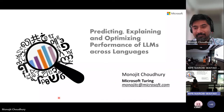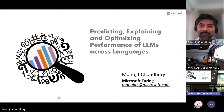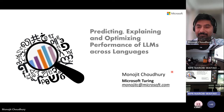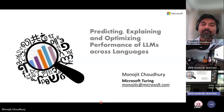Thank you very much, Jackie, for that wonderful intro. I'll go straight to welcoming our keynote speaker all the way from India. Dr. Monajit is a principal data and applied scientist in Chennai, India, where they build large universal language models that form the backbone of various Microsoft products. Prior to this, Monajit was a principal researcher at Microsoft Research Lab India.